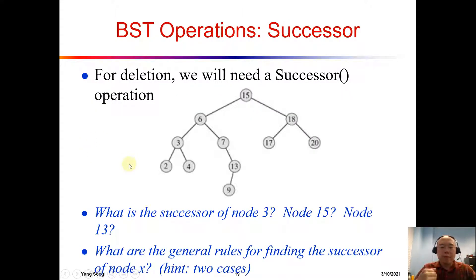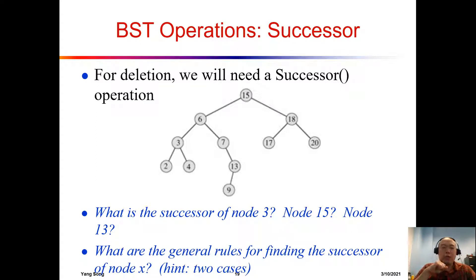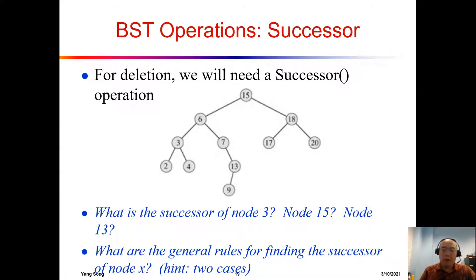The next thing is we also have to do the deletion, and we want to have a successor. The definition is: if we have a node, the successor of this node is the node we are going to visit next when we are doing in-order tree traversal. If you have a node, the successor will be the value or the node you visit next after you have touched the current node when you are running in-order tree traversal. So using this idea, what is the successor of node 3? After you finish visiting 3, what is the next node you are going to visit?